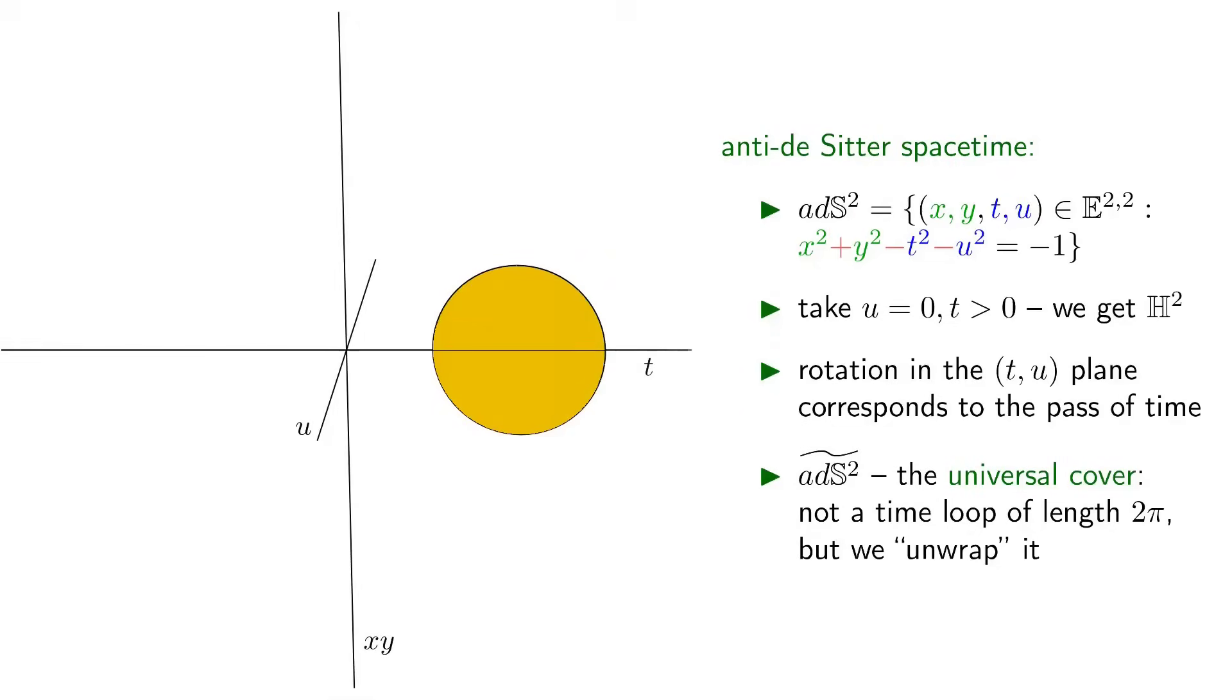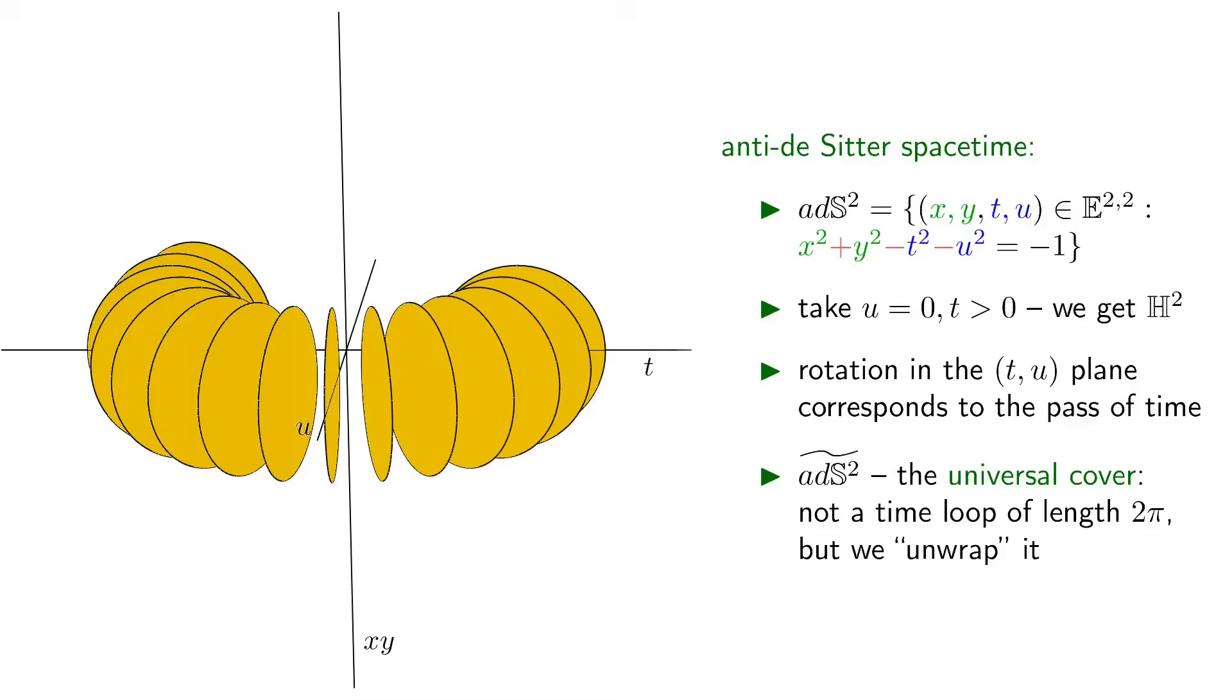Here is how we add a time coordinate to the hyperbolic plane to get 2 plus 1D anti-de Sitter spacetime. As you can see, the construction is quite similar to the previous ones. And again, we get a maximally symmetric spacetime. The disk shown here is the hyperbolic plane at time slice 0, which means u equal to 0 and t greater than 0. By rotating around the TU plane, we get the further time slices. Sadly, we encounter closed time loops which are impossible to simulate in a video game.